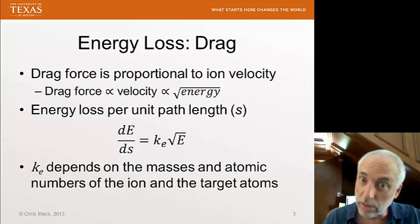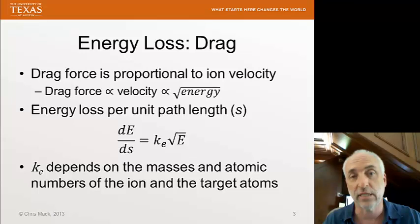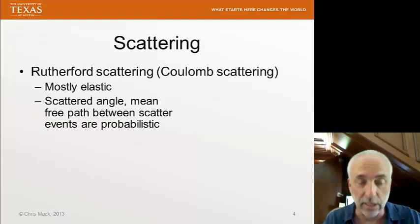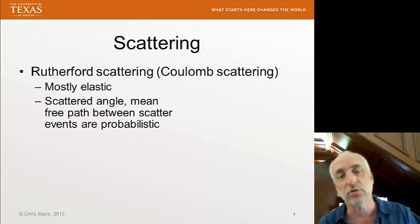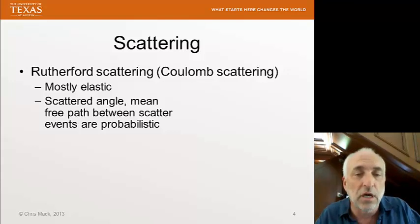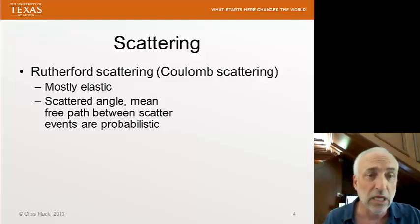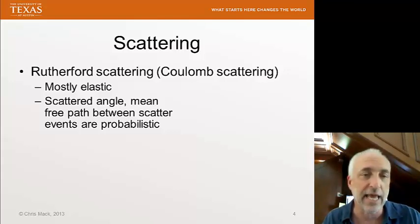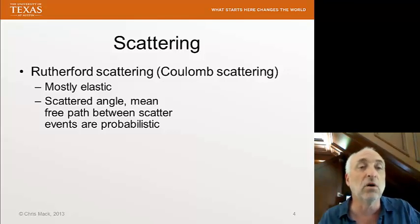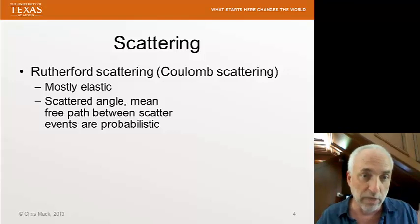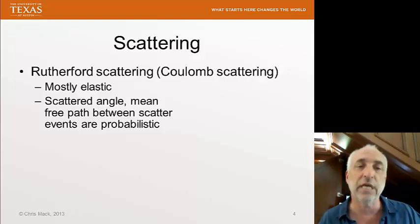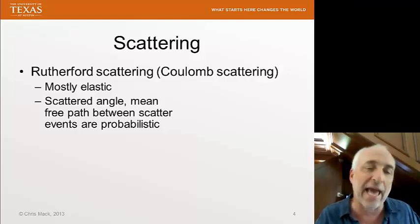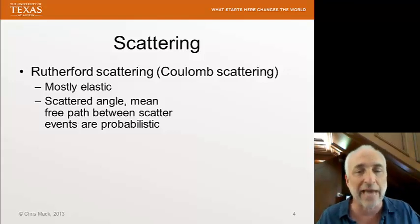Energy loss is only one way the ion interacts with the crystal. The other is scattering — Rutherford scattering, or Coulomb scattering. We have a positive ion close enough to the positive nucleus of the silicon atom, and it bounces off. These scattering events are mostly elastic, meaning there's little energy loss in the scattering event itself. We have a change in direction of the ion, but the energy loss comes more from the drag with electrons than from scattering off nuclei.